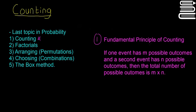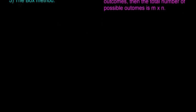So here I have it scribbled out here—the fundamental principle of counting. It states that if one event has m possible outcomes and a second event has n possible outcomes, where m and n both stand for different numbers, then the total number of possible outcomes is m times n. That sounds way more confusing than it is. We'll just look at a quick example and you'll see how simple it can be.